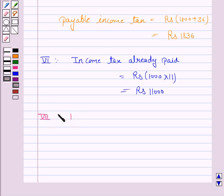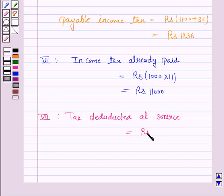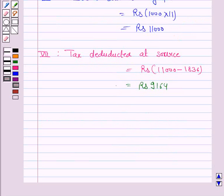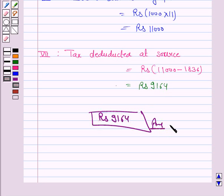The net income tax payable is Rs. 1,836 and the income tax already paid is Rs. 11,000. Since income tax already paid exceeds net tax payable, Kapil does not need to pay any income tax in the last month. In fact, he will be refunded Rs. 9,164. So the answer is Rs. 9,164.